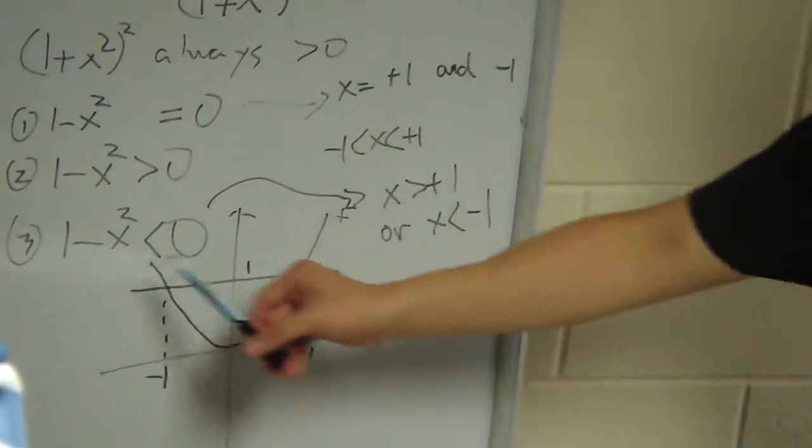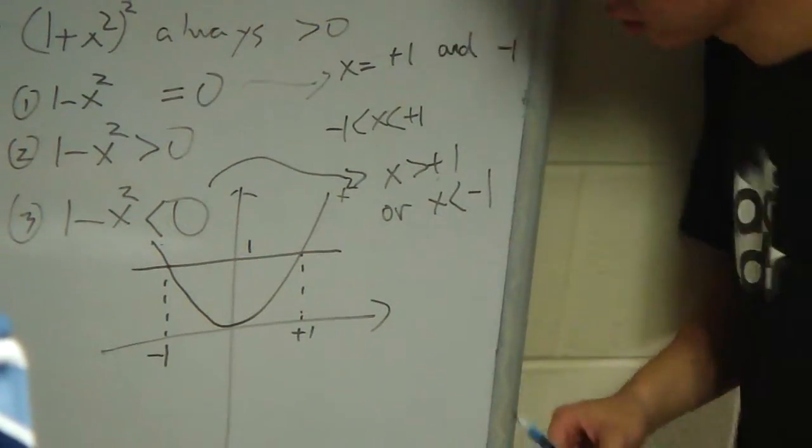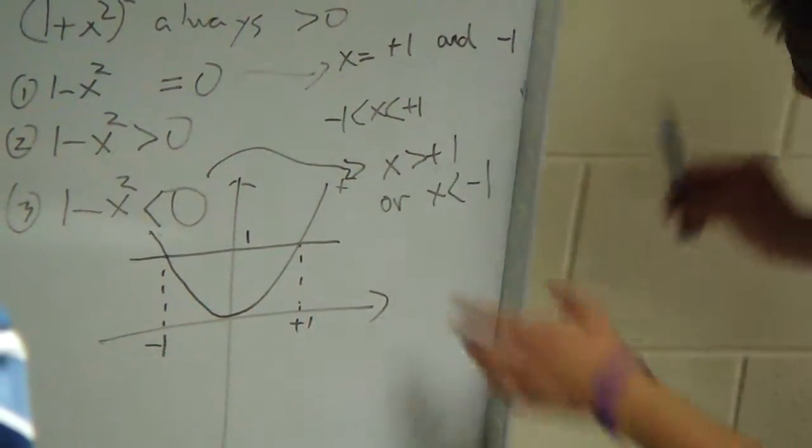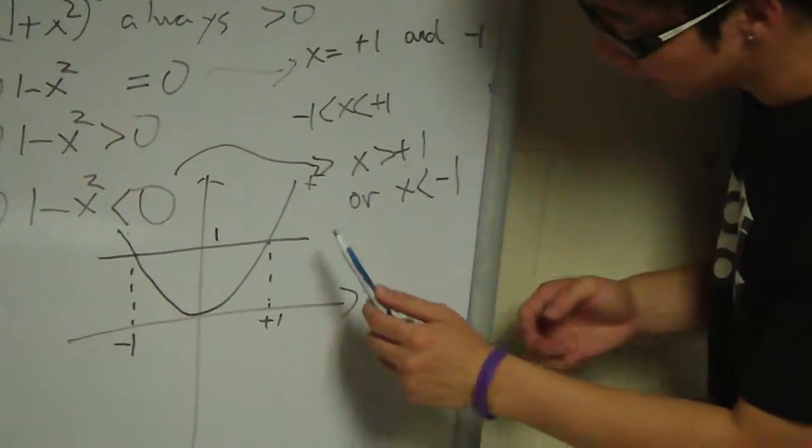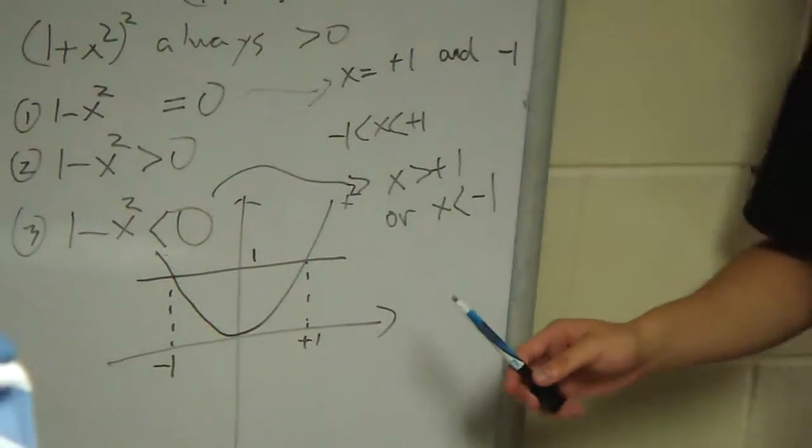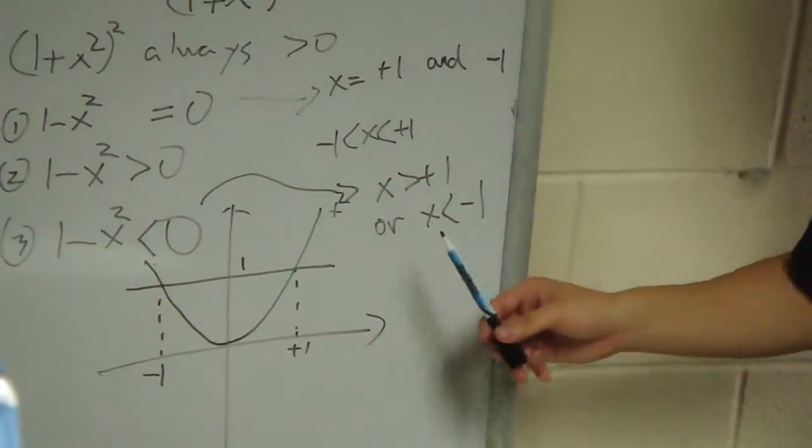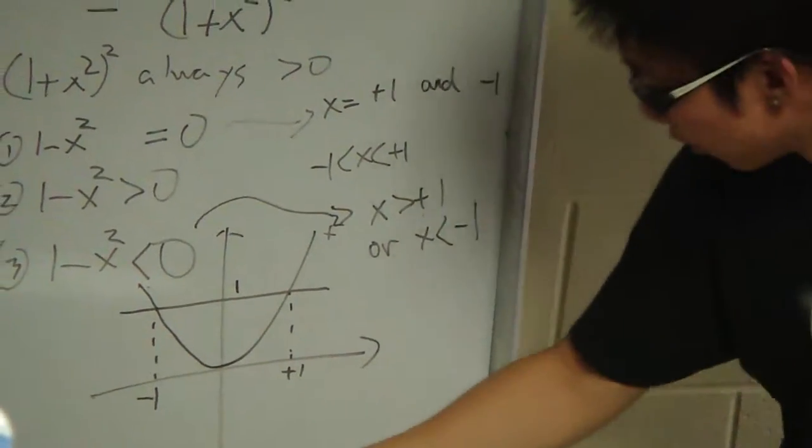When 1 - x² is smaller than 0, which means x² will always be greater than 1. The domain of x will be on this side or on this side. So x will be greater than positive 1 or x will be smaller than negative 1.